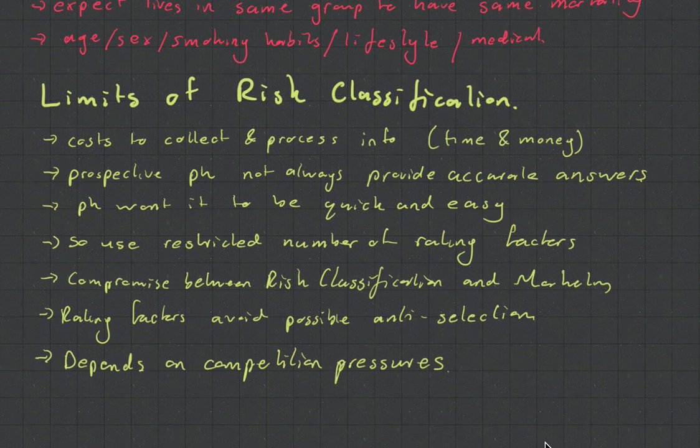And, finally, there are some limits of risk classification. The big ones being that it costs to collect and process information. Think, if you want to know someone's medical history, you have to take blood tests, it's going to take time, it's going to inconvenience the customer, all these type of things. Okay? Policy holder wants it to be quick and easy when they buy insurance.